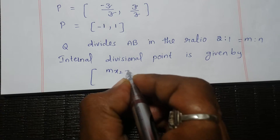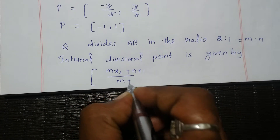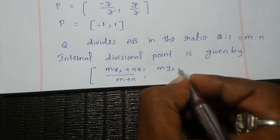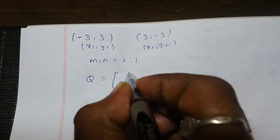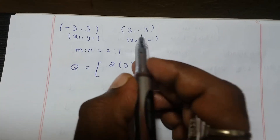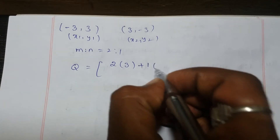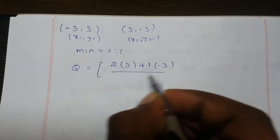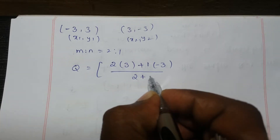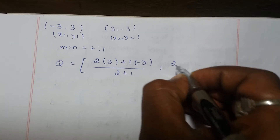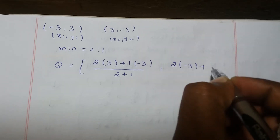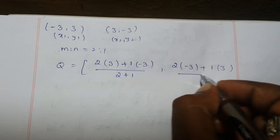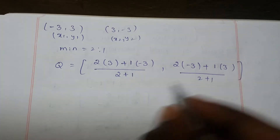Using the section formula (m·x2 + n·x1) / (m + n) and (m·y2 + n·y1) / (m + n), with m = 2 and n = 1: x-coordinate = (2·x2 + 1·x1) / (2 + 1), where x1 is -3. y-coordinate = (2·y2 + 1·y1) / (2 + 1), where y1 is 3.